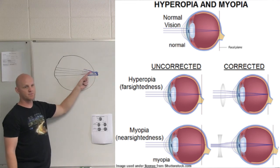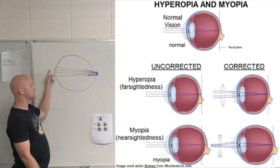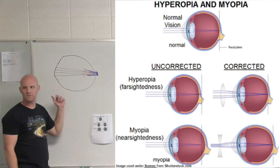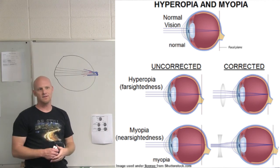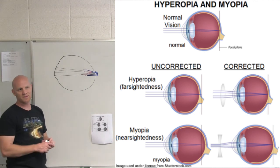Now, the ones that converged before they reached the retina, you want those to converge later, which means you want to put a diverging lens out front. And that's how you correct for farsightedness and nearsightedness using the appropriate lens.